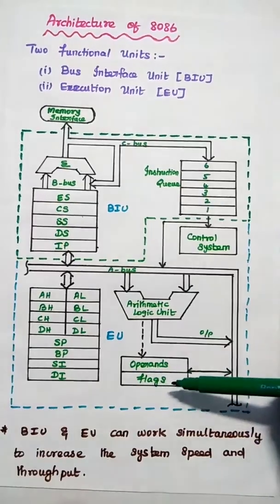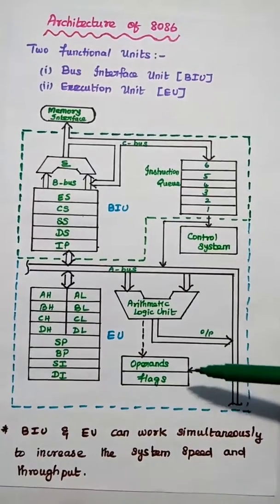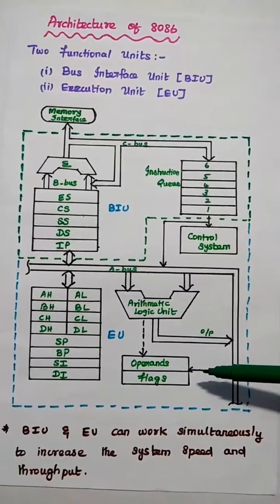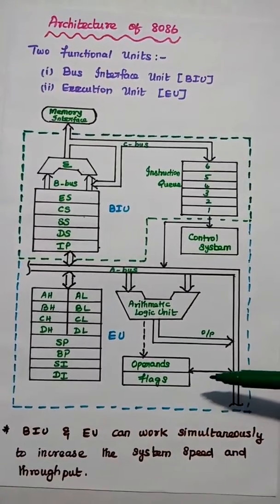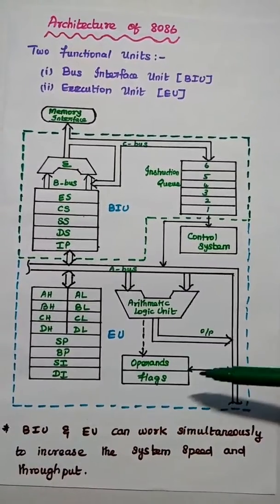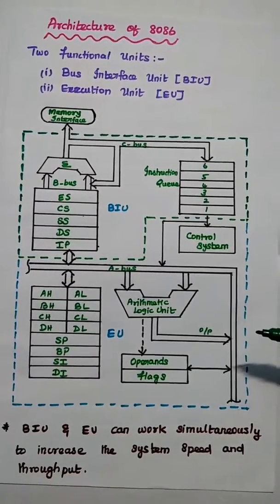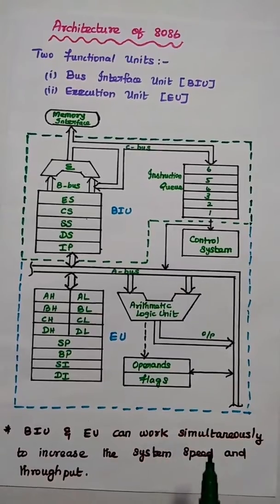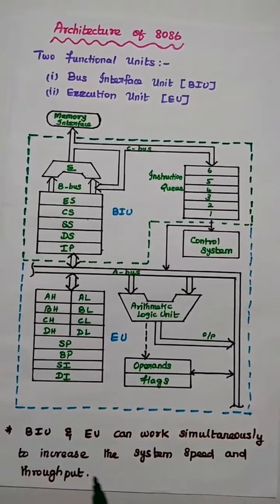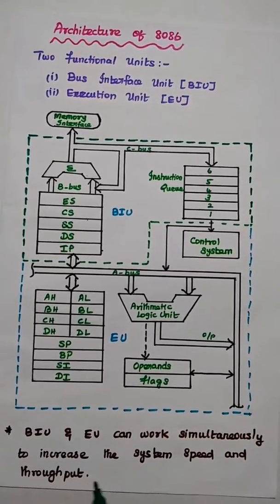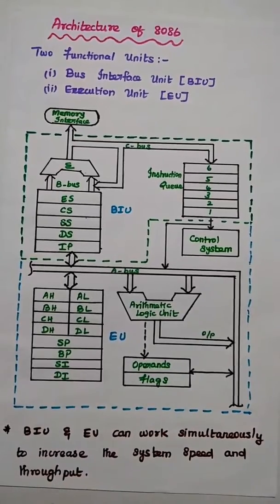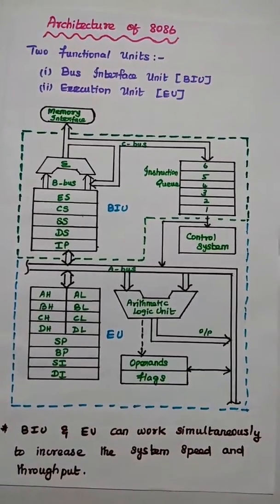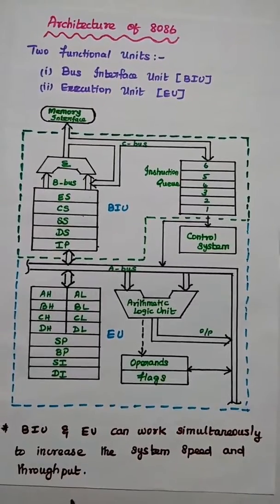The operands and flags are given to the registers. Flag registers are mainly used to identify the status of the output — that is, the conditional level of that output. The BIU and Execution Unit can work simultaneously to increase system speed and throughput. Throughput means the number of instructions executed per clock cycle.